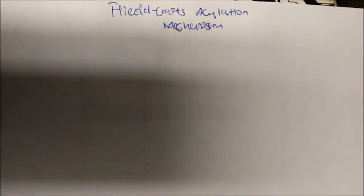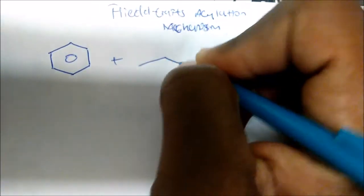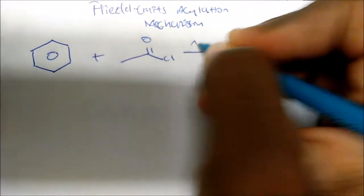In this video I want to talk about Friedel-Crafts acylation mechanism. If I take benzene and react it with an acid chloride and some sort of Lewis acid, let's use aluminum trichloride.